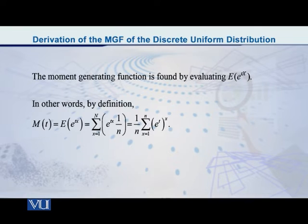But you know that a raised to bc can also be written as a raised to b, whole raised to c. Here I would like to do that. And so what is the expression that I have now? I have the equation M(t), the MGF of the random variable x, is equal to 1 over n summation e raised to t, whole raised to x.